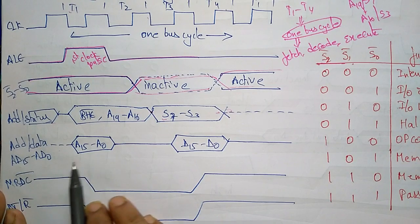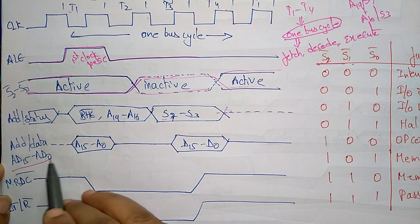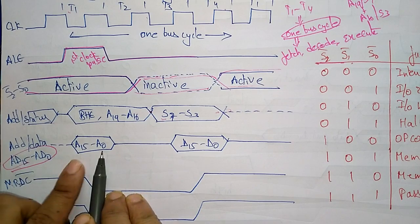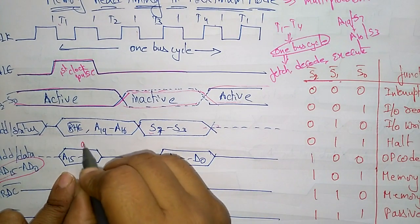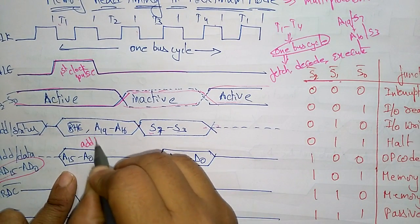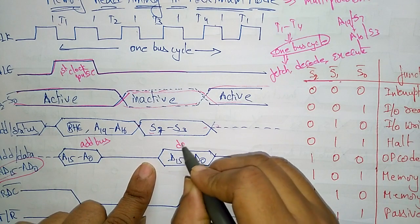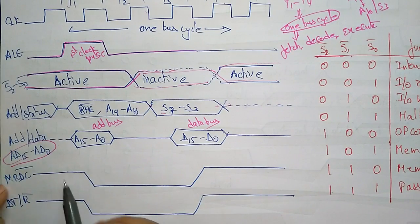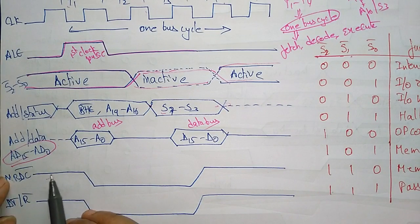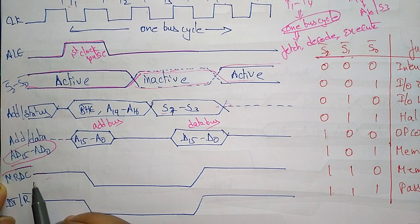Coming to the demultiplexing — the multiplexed lines AD0 to AD15 have to be demultiplexed each clock pulse. First the address will be placed on the address bus, and in the remaining clock pulses the data will be placed on the data bus. This is the memory read timing.